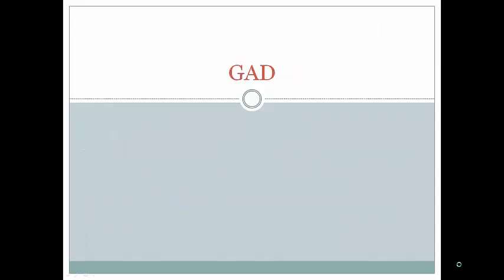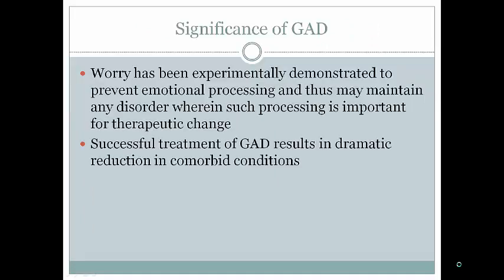Now we'll talk about generalized anxiety disorder, or GAD. Worry has been experimentally demonstrated to prevent emotional processing, which is important for therapeutic change. Once successfully treated, GAD patients show large declines in comorbid symptoms. GAD is defined as worrying for six months or more about a variety of issues, spending more than 50 percent of the time on more than half the days of the week worrying, often in proportion to the realistic concern.